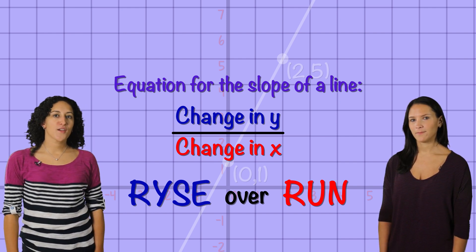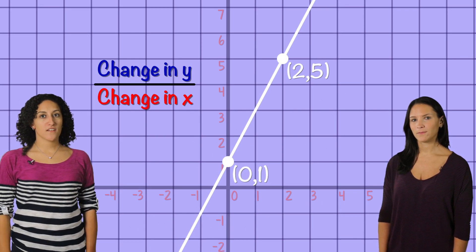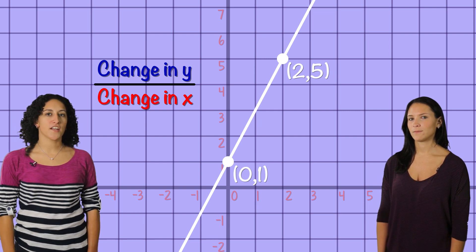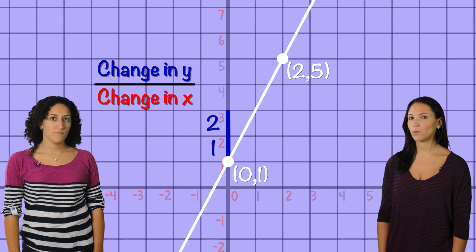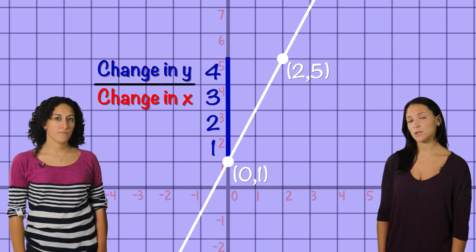So in order to find the slope by counting, we start at the first point, 0, 1, and climb up the y-axis to find our rise. The change in these y-positions is 1, 2, 3, 4. Our y-value is 4.